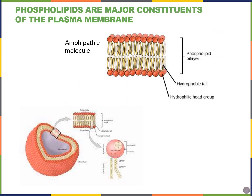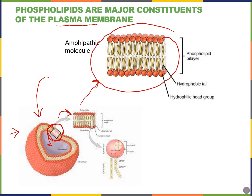Phospholipids are really important to the cell membrane, also known as the plasma membrane. A cell is typically a spherical structure embedded in water — the outside is mostly water and the inside is also mostly water. The cell membrane is made of a phospholipid bilayer — two layers of phospholipids — where the water-loving portion faces the outside and inside of the cell, and the water-fearing tails of the bilayer face each other in the middle to get away from the water.